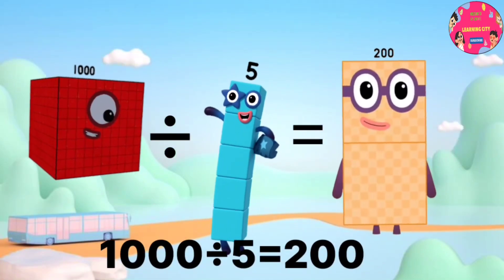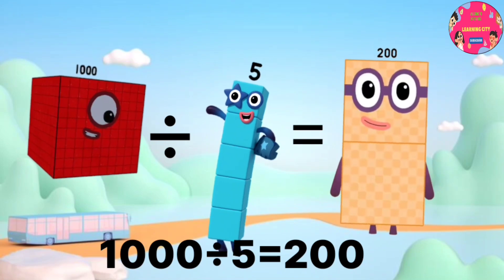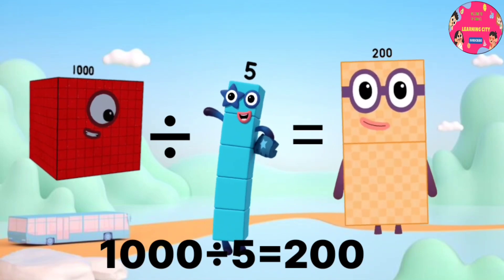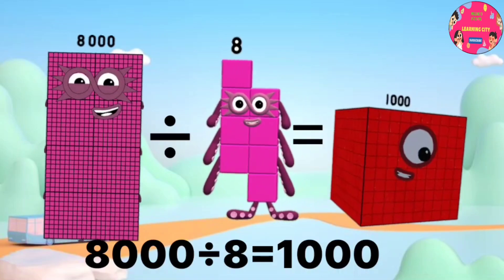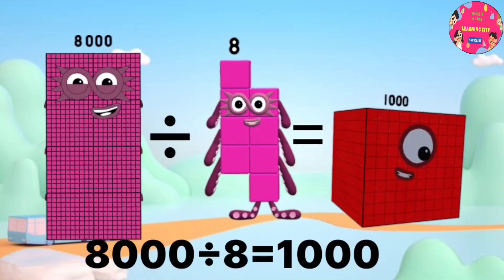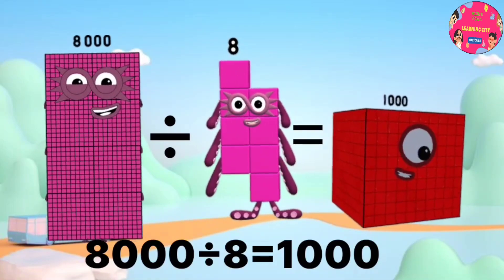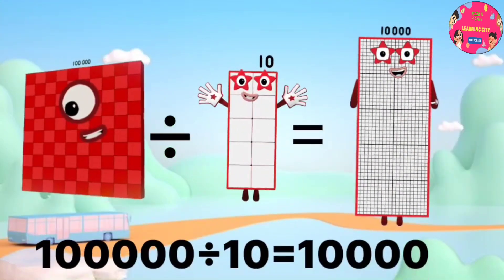1,000 divided into 5 equals 200. 8,000 divided into 8 equals 1,000.